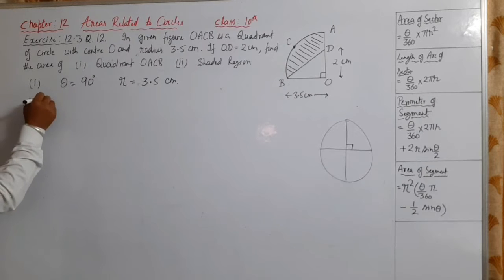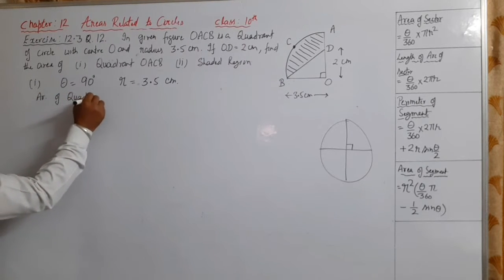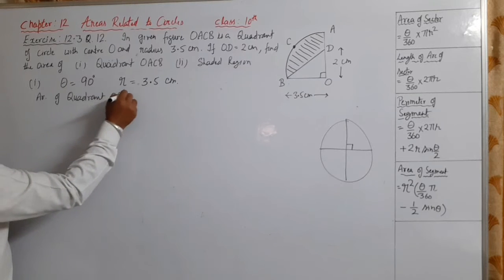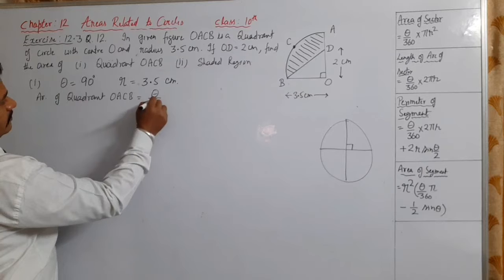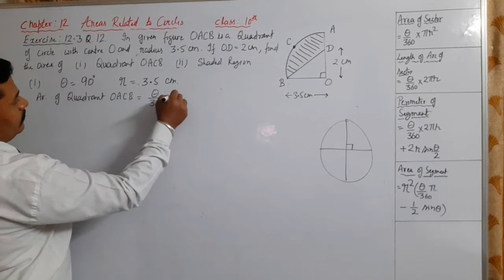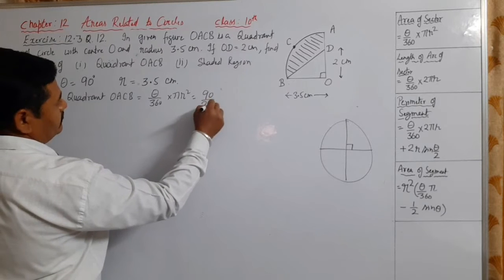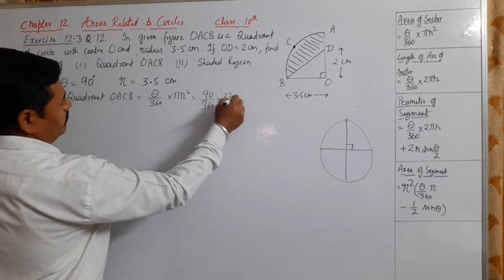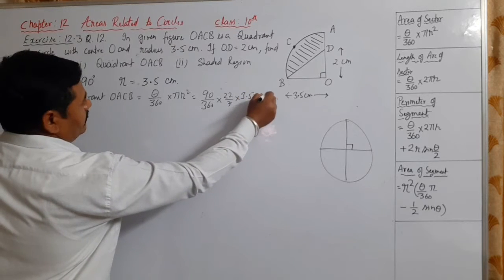Area of quadrant OACD is equal to theta upon 360 into pi r square, which is 90 upon 360 into 22 upon 7 into 3.5 into 3.5.